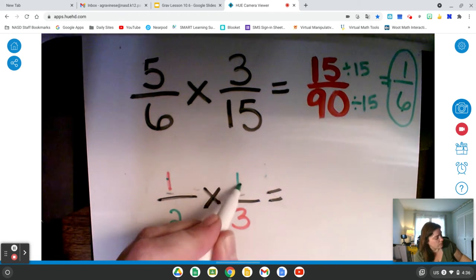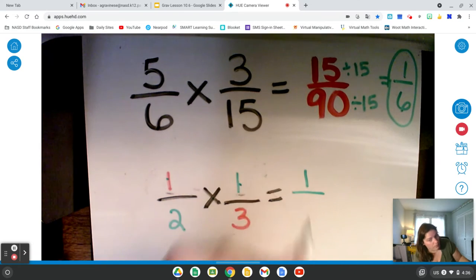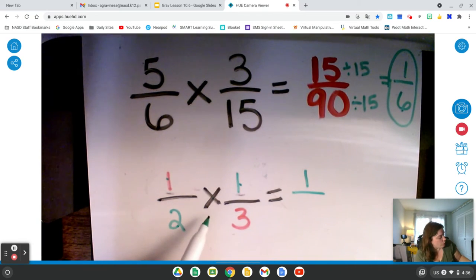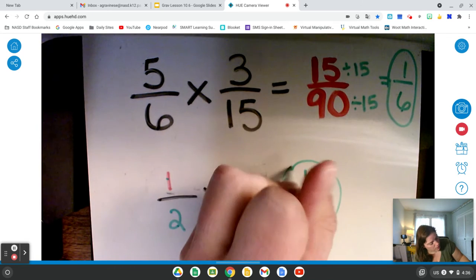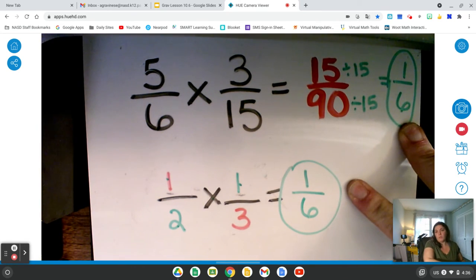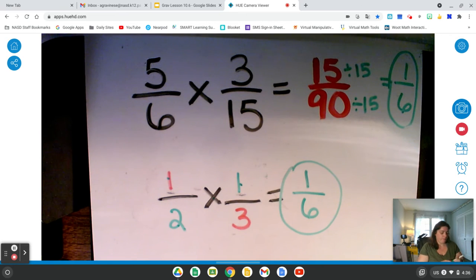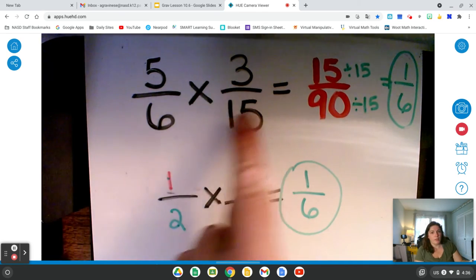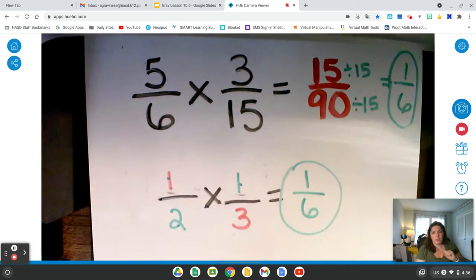1 times 1 is 1. 2 times 3 equals 6. I get the same product as I did when I solved it the other way. So it's really about picking which works for you. Okay. You can do all of that multiplying in the beginning and then just simplify your answer.